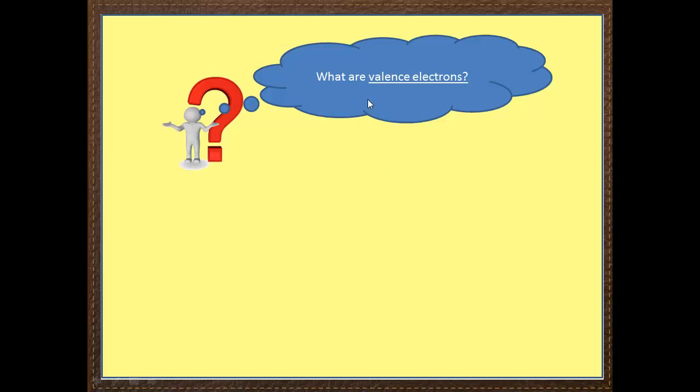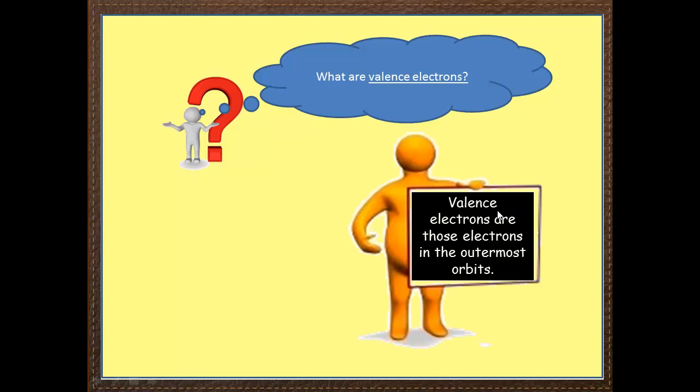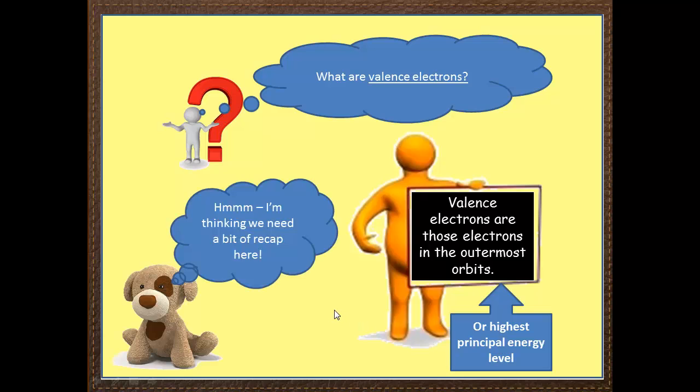So let's ask ourselves a question. What are valence electrons? Well, by definition, valence electrons are those electrons in the outermost orbits. We could also refer to those as the highest principal energy level. The what? The highest principal energy level. I think we just need a bit of recap here.